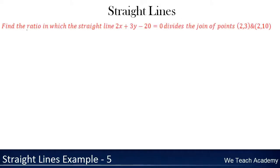Here we need to find the ratio in which the straight line 2x plus 3y minus 20 equals 0 divides the join of the points (2,3) and (2,10).